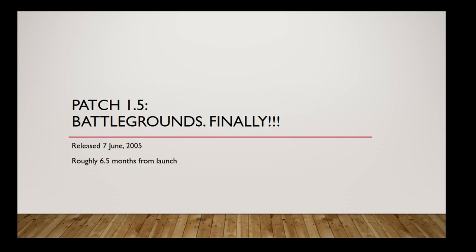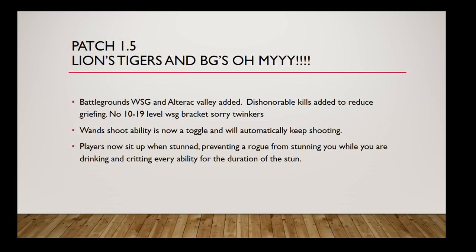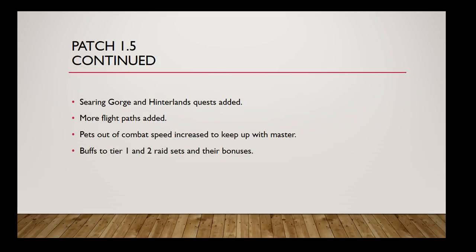Patch 1.5 is when Battlegrounds really kicked off. Previously the honor system was in, but battlegrounds didn't really kick off until this patch. They also had funky level brackets — like 11 to 20 — where you'd have that level 20 or level 30 or level 40 situation, which was pretty crazy. This is also when the Wand Shoot ability would now toggle automatically and keep shooting. And a big one — if a rogue jumped on you while you were sitting down and stunned you, you would stay seated, so they would just get crit after crit on you.